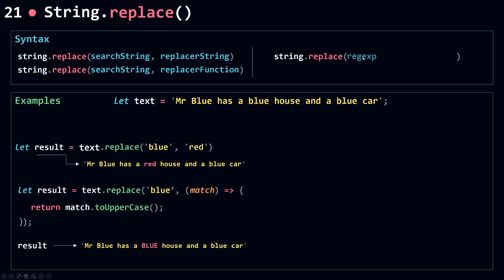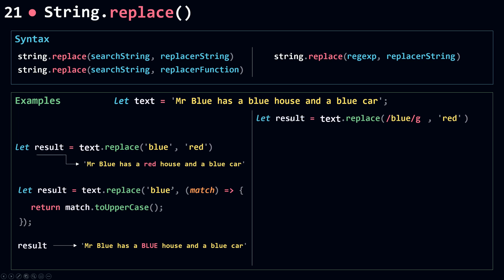The replace method can also take a regular expression instead of a search string, giving you the power of regular expressions. The second parameter is still the replacer string. In this example, I call replace passing in the regex for 'blue' with the global flag, and the replacement is 'red'. Because I used the global flag, replace will go and replace all matches with 'red'. Without the global flag, only the first match would be replaced.